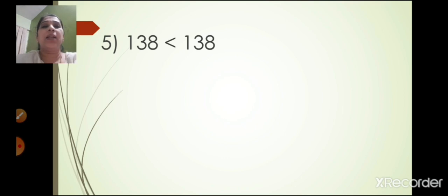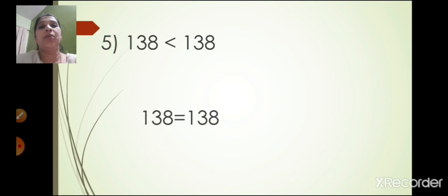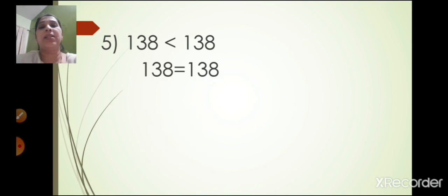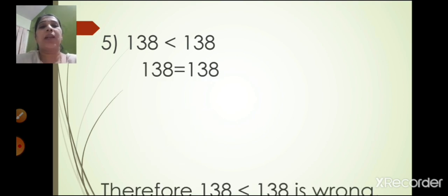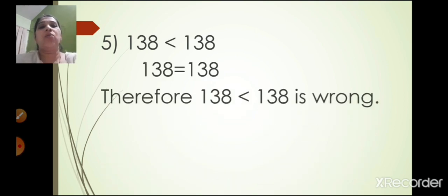The fifth one: 138 is smaller than 138. As mentioned, both numbers are the same, so they are equal. Therefore 138 is smaller than 138 is wrong.